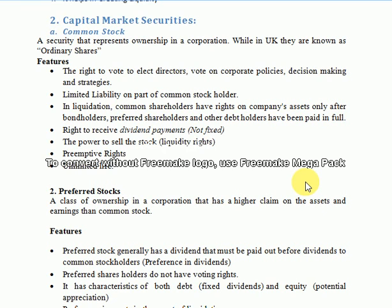Another feature is unlimited life. Once common stock is issued by the company, it has no maturity date. As long as the company remains in operation and does not become bankrupt, that common stock will continue trading in the market and the company will declare dividends on it. Common stockholders hold stock with unlimited maturity.